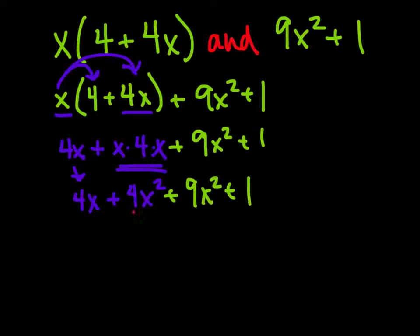Now we have like terms here. We have x's, and they're both being squared, so we can add those together. That'll become 13x². We don't have any like term to go with this 4x, so it's just 4x.